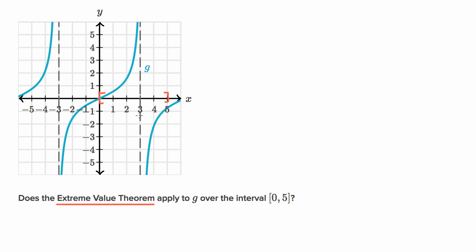Is our function continuous on the closed interval from zero to five? No — we clearly have a discontinuity right over here at x equals three. So we would say no, and we can't say that over this closed interval we have a well-defined maximum or minimum value. This is actually very clear here: we approach infinity over there, then we approach negative infinity over there, so the extreme value theorem does not apply.